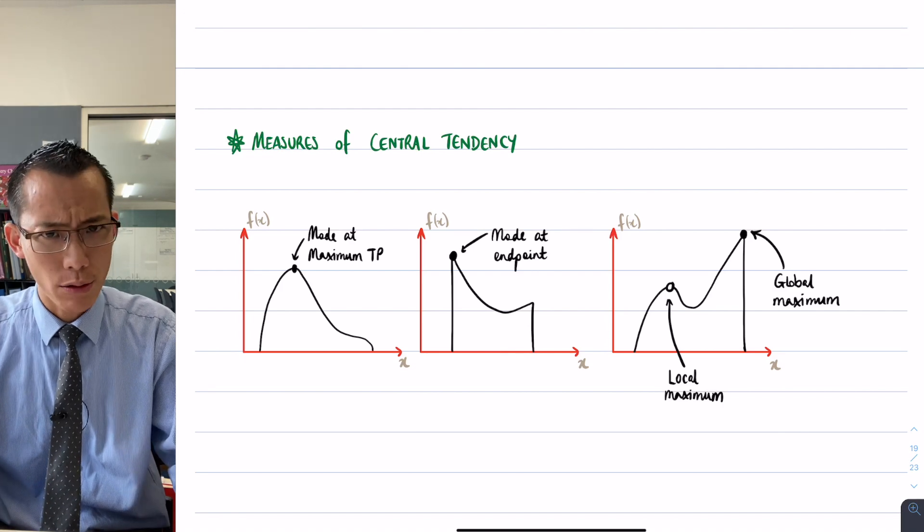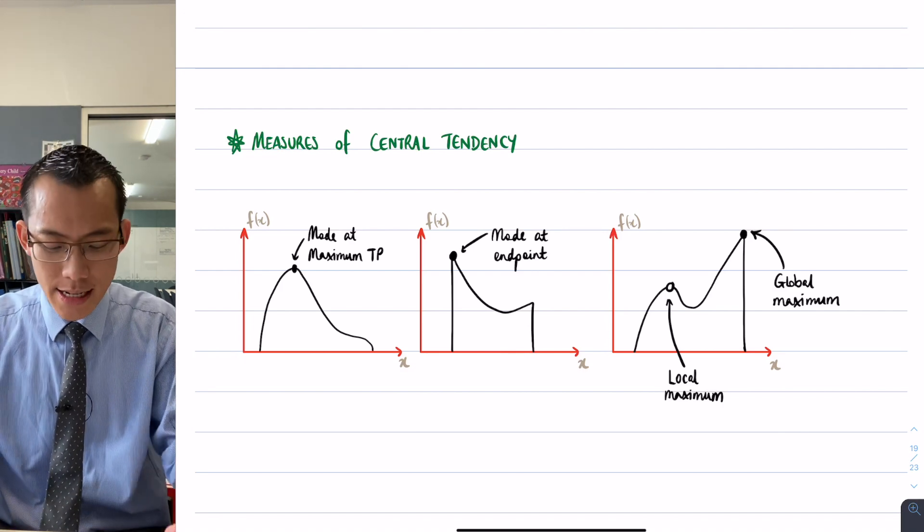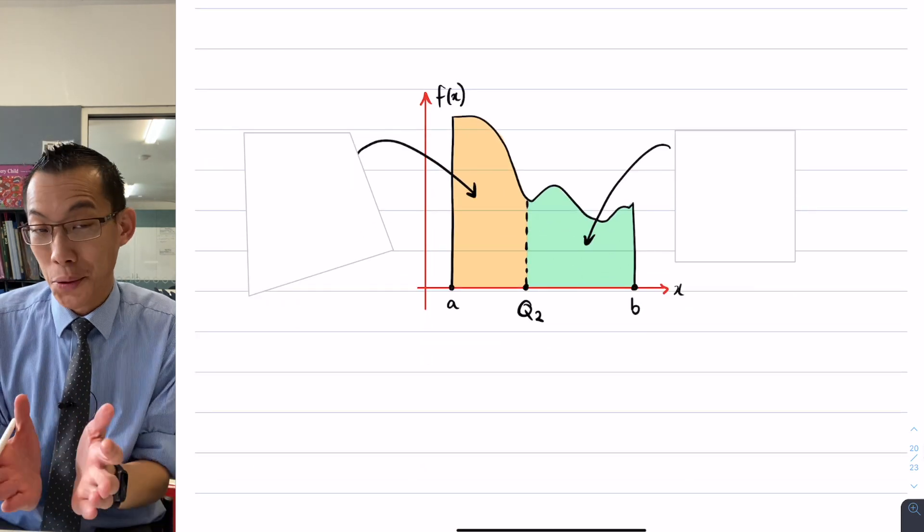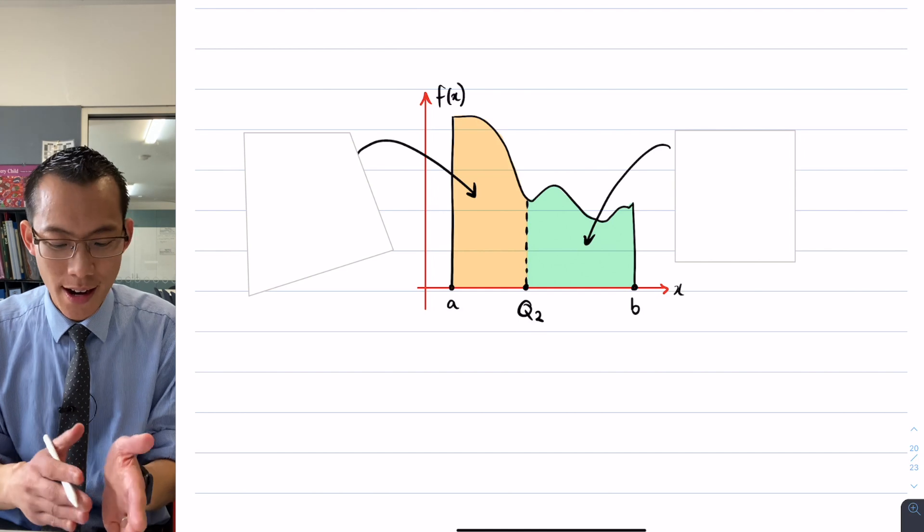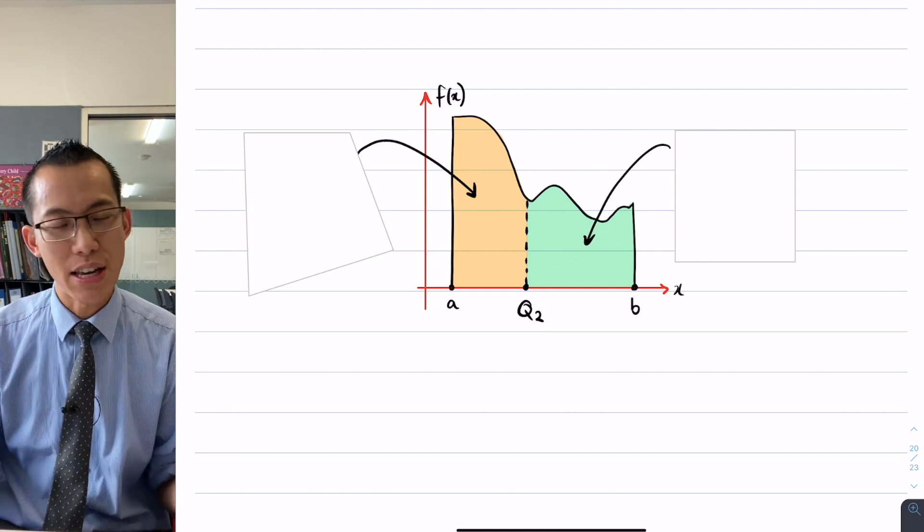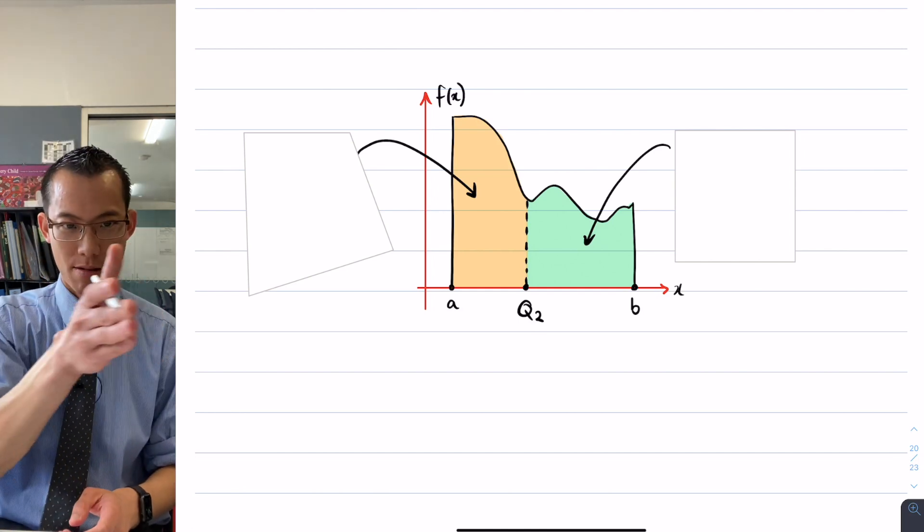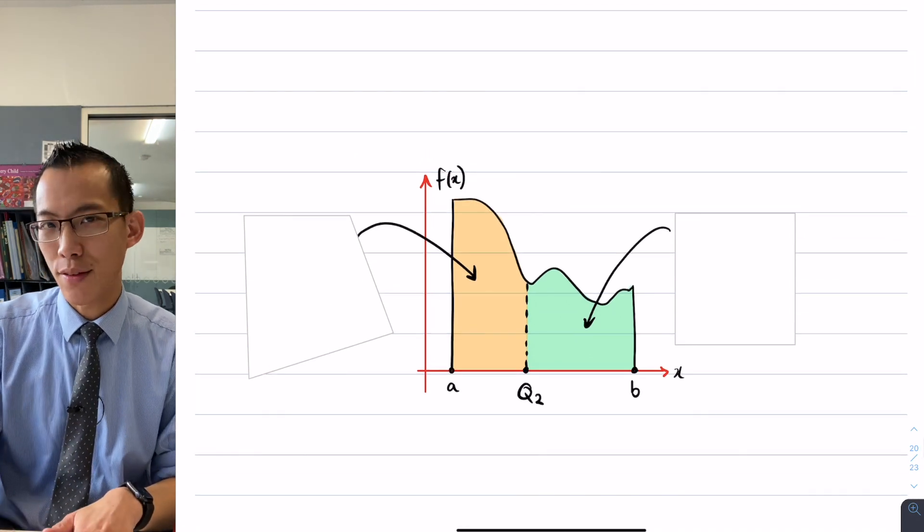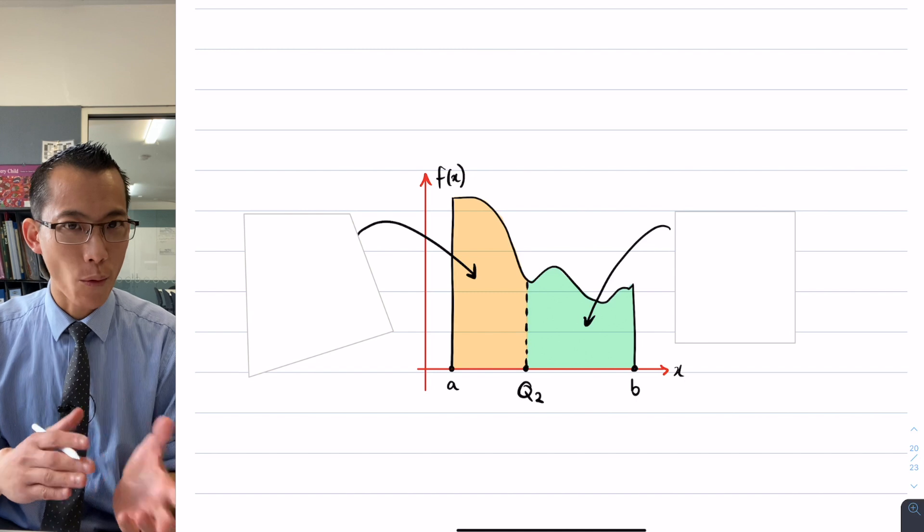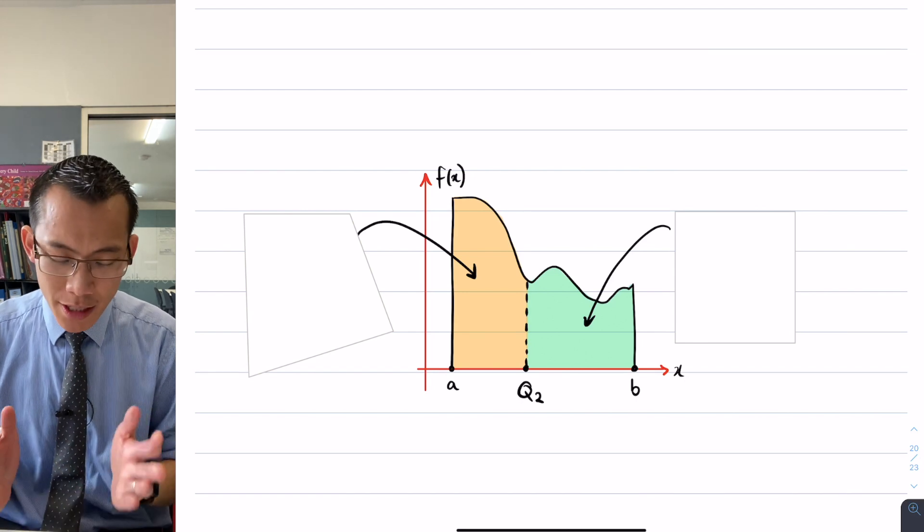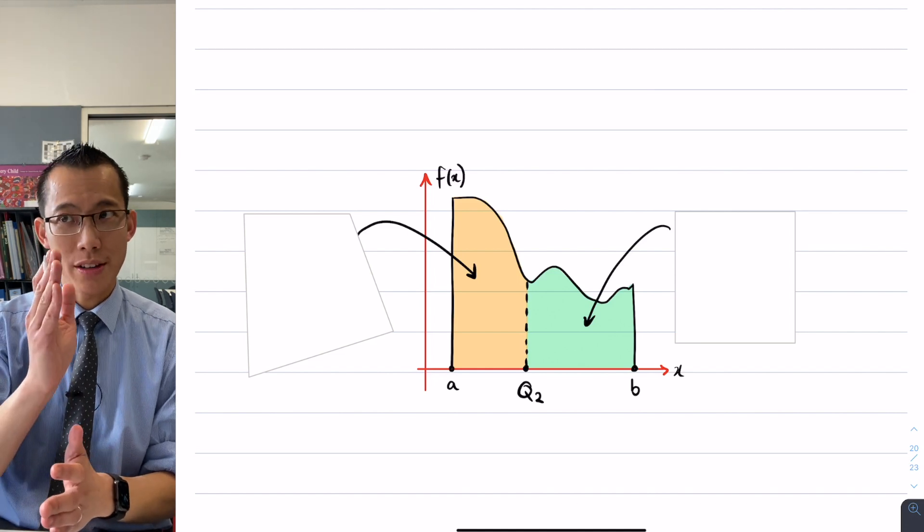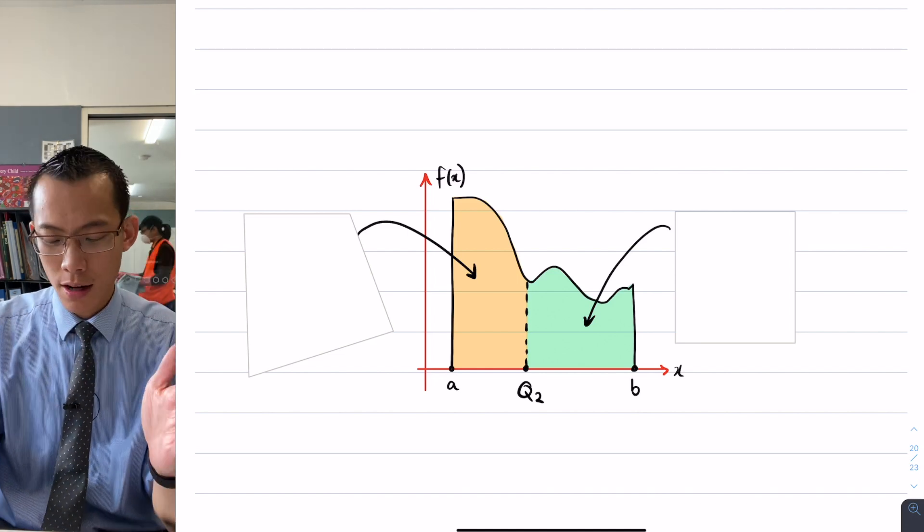So this is what we looked at with the mode, and then we introduced this idea of the median being in the middle of the data set. Now because I don't know what my actual data points are, I can't just line them up in ascending or descending order and say the middle one is right here. I have to think about what the probability density function will tell me about where the median is. And because the median splits your data set into two, what we can say is not only is it in two, but it's in two equal halves.